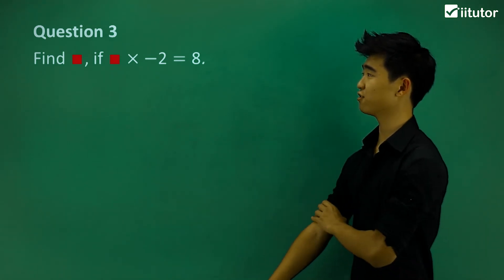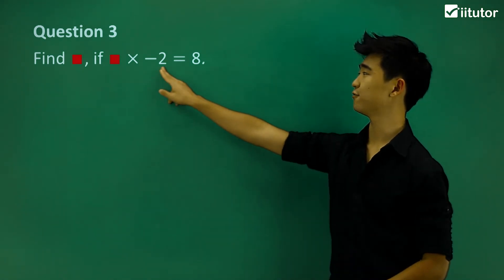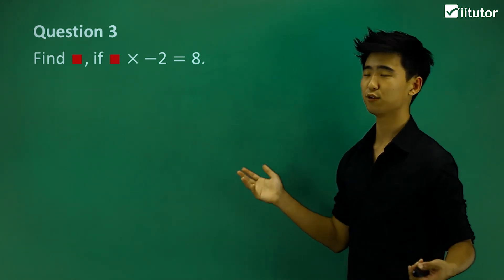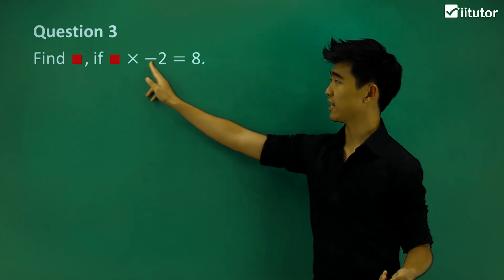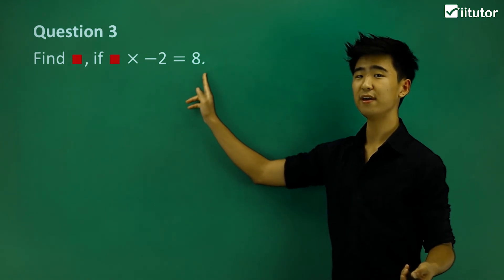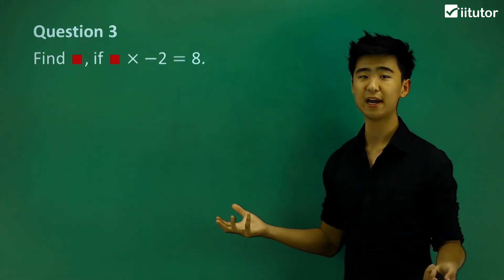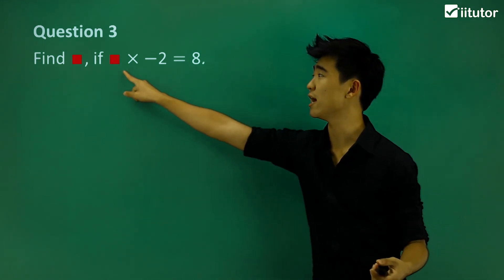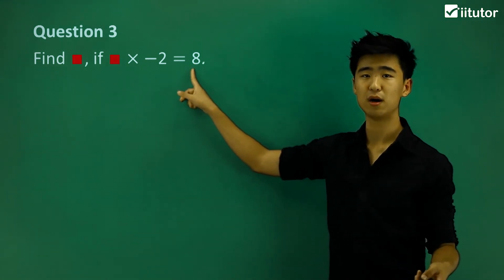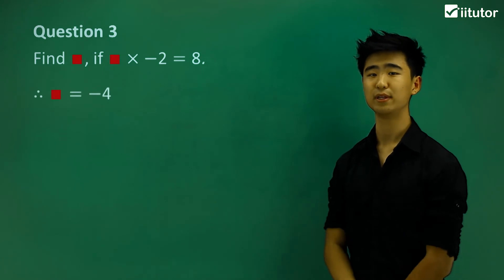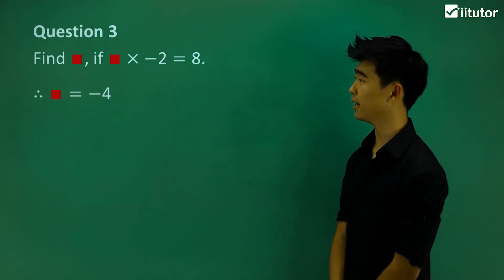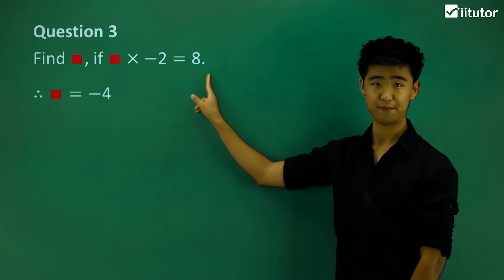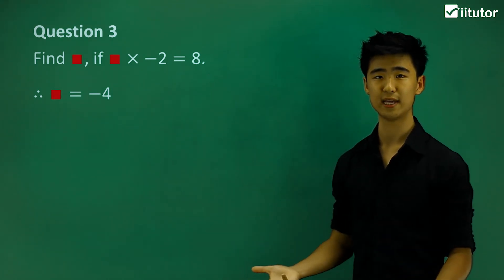Let's look at question number three: if the red box times negative two equals eight, what is that red box? We have a negative sign and the result is positive, so the two signs should be the same to get a positive number. The answer is simply negative four — negative four times negative two gives positive eight.